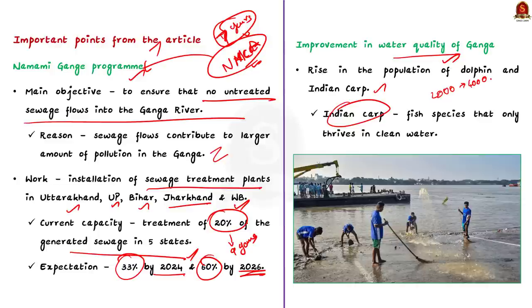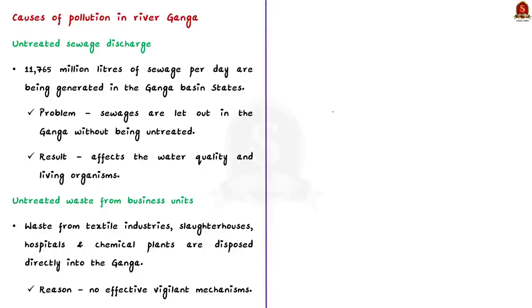Now we will see the causes of pollution in river Ganga. The first and foremost cause is untreated sewage water. Nearly 11,765 million liters of sewage are generated daily in the Ganga basin states of Uttarakhand, Uttar Pradesh, Bihar, Jharkhand, and West Bengal. Mostly the sewage is let out into the Ganga untreated, affecting water quality and living organisms in the river. Only 20 percent of the sewage is currently treated.